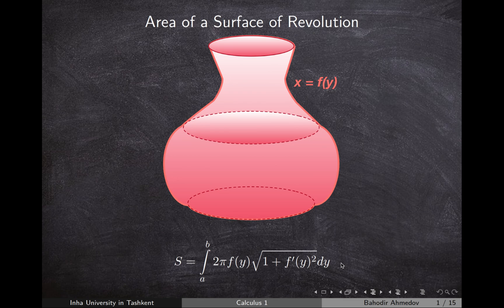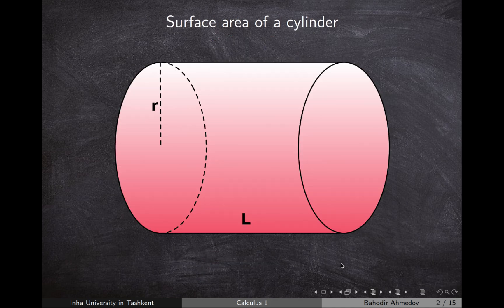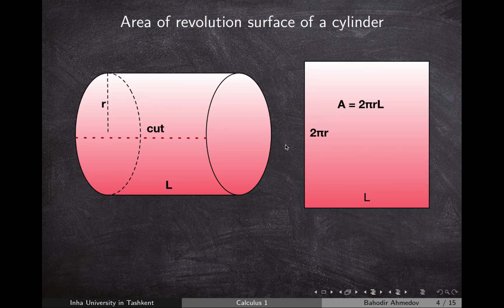We're going to start with the surface area of more basic objects. Let's say we're given a cylinder with the radius of the base R and with the height L. To find the surface area of revolution, I need to cut this and open it up — it's going to be a rectangle. The width of the rectangle is going to be the same as the side of the cylinder, L, and the height is going to be the circumference of the base, 2πR. So the surface area of revolution of the cylinder is equal to 2πR multiplied by L.